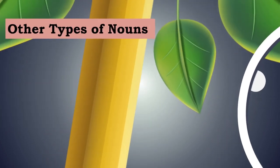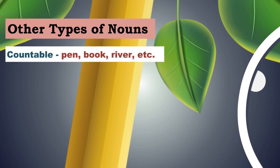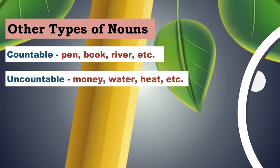Now there are different types of nouns also. There are countable nouns which you can count — you can put a number before that and it will make sense. For example, one pen, two pens, one book, two books, one river, two rivers. Then there are uncountable nouns. For example, money — you cannot say one money, two monies. Similarly, water — you don't say one water, two water; you say one glass of water. Glass is the countable noun, but water is uncountable.